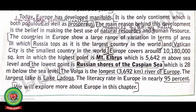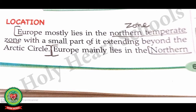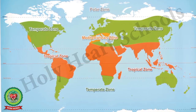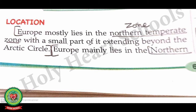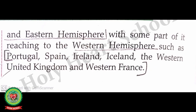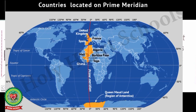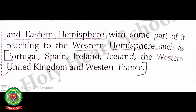Europe mostly lies in the northern temperate zone, as it lies beyond the Tropic of Cancer, with a small part extending beyond the Arctic Circle. Europe mainly lies in the northern and eastern hemisphere, with some part reaching into the western hemisphere. This is because the prime meridian — zero degree longitude — passes through Greenwich, near London in Europe. Some part of Europe lies west of the prime meridian. The countries of Europe in the western hemisphere include Portugal, Spain, Ireland, Iceland, western United Kingdom, and western France.